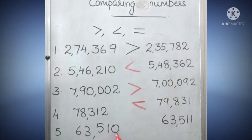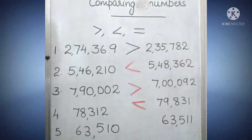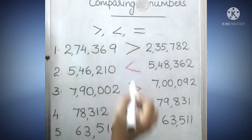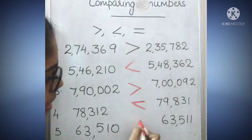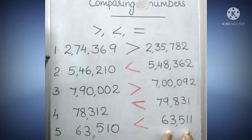Look at the number here. Here five-digit number, here five-digit number. Here comes six, here also six. Three, three — no change. Five, five — no change. One, one — no change. Then compare the last digit: zero and one. Which number is greatest — zero or one? You all know: zero is less than one. One is the greatest number. So which symbol will we put there? The less than symbol. That is, this number is less than this number, this number is greater than this one. The hungry alligator mouth swallows the greater number.